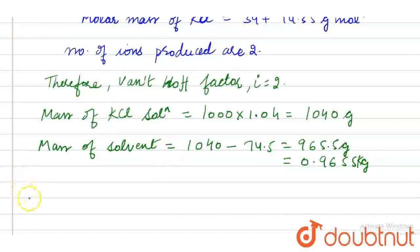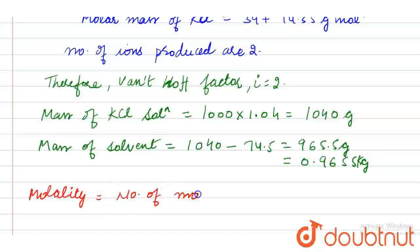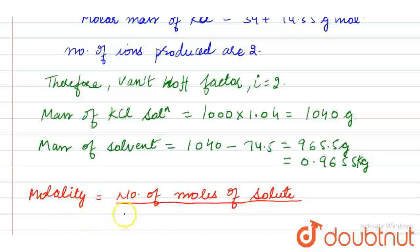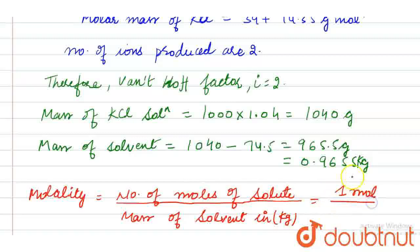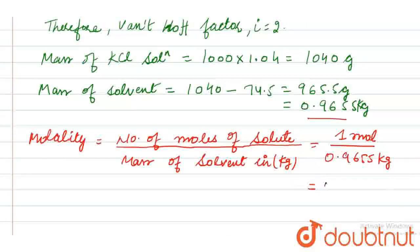We know the formula for molality of the solution: molality equals number of moles of solute divided by mass of solvent in kilograms. The number of moles of solute is 1 mol, and mass of solvent is 0.9655 kg. Calculating gives a molality of 1.0357 m.